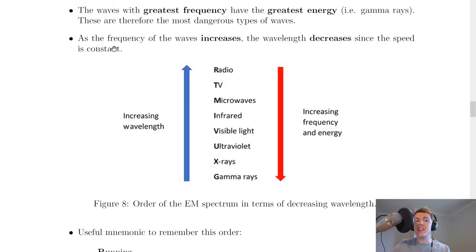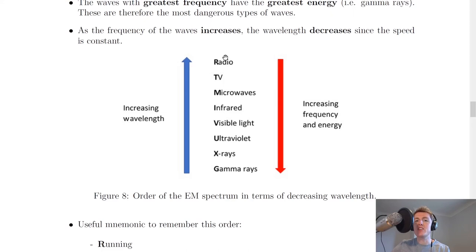And we've already mentioned the relationship between frequency and wavelength, but it says it here explicitly. So as the frequency of the waves increases, the wavelength decreases since the speed is constant. So remember that inverse relationship for frequency and wavelength. If we have one increasing, then the other needs to decrease.